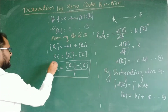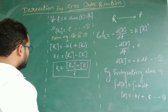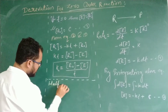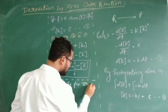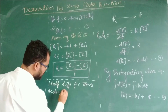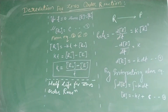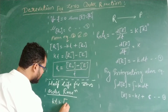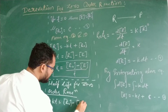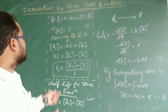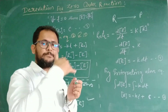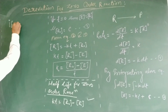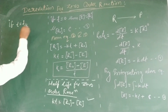This is the zero-order rate law for R. Now, if we want the half-life result for zero-order reaction, we use the condition where R equals R-naught divided by 2, meaning half the reaction is already complete.